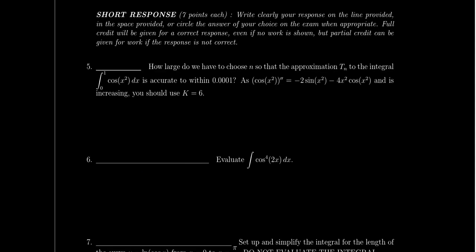Moving on to the short response section — remember, there are four questions, each worth seven points. Question five will be a second question about numerical integration, and it will be the last question on the test from numerical integration. It's going to ask you to work with the error bounds associated with these numerical estimates. The trapezoid rule, midpoint rule, and Simpson's rule each have an error bound — consult your study materials or notes to find the exact formulas.